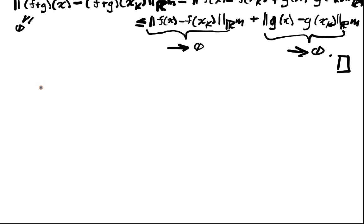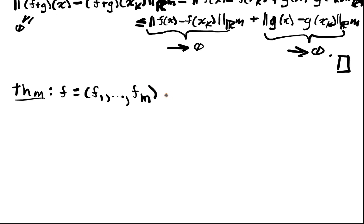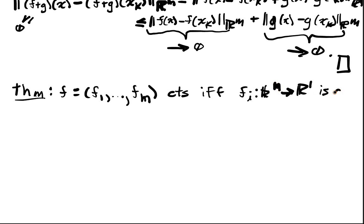Another really useful fact that shows exactly what continuous functions from Rn into Rm are doing: suppose I have a function f with components f1 up to fm. Then f is continuous if and only if each of the component functions fi from Rn into R1 is continuous. So if f is continuous then all the components are continuous, and if the components are continuous then f is continuous. That's a really nice fact.